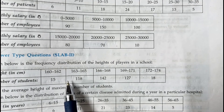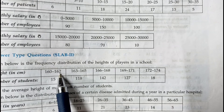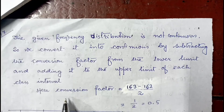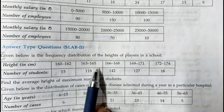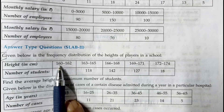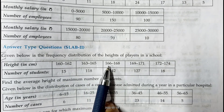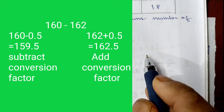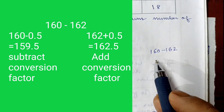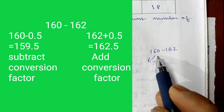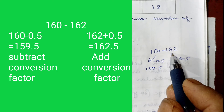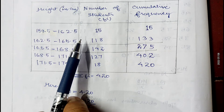Since the table is not continuous, we must make it continuous using a conversion factor. The conversion factor is calculated as: (lower limit of second class − upper limit of first class) / 2 = (163 − 162) / 2 = 0.5. To make the table continuous, subtract 0.5 from each lower limit and add 0.5 to each upper limit. So the first class 160 to 162 becomes 159.5 to 162.5.